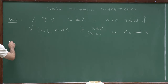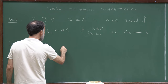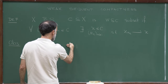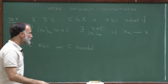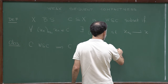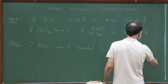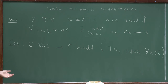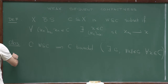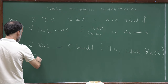My first observation is that if C is weakly sequentially compact, then it is bounded. Bounded meaning that there exists a constant C0 such that the norm of X is bounded by C0 for all X in the set C. We prove this by contradiction: assume that C is not bounded.